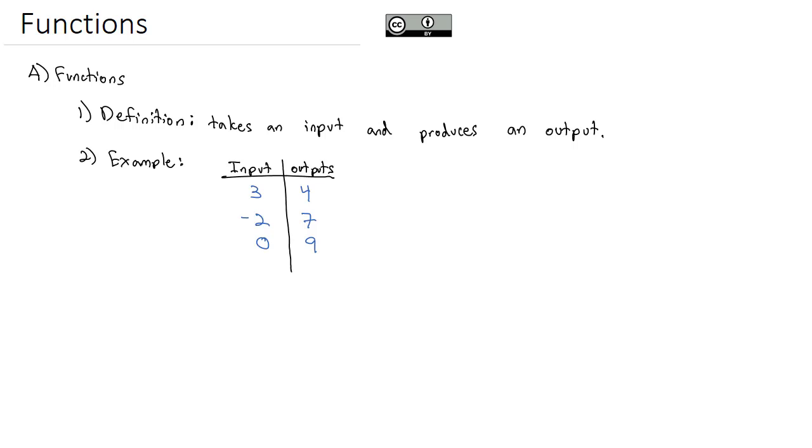But what's important about a function is if I put the 3 into the function again, it's already been in there once. The output will always be exactly the same. So it should also be a 4 exactly the same as it was before. Now, a lot of the times in mathematics, we don't use the terms inputs and outputs. We use x to represent the inputs and y to represent the outputs.